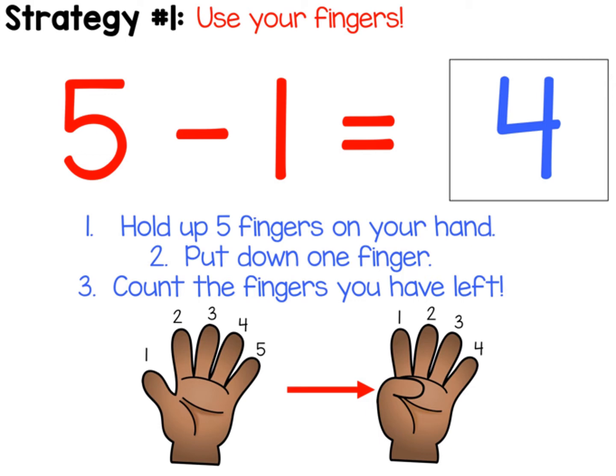Boys and girls, we're going to be learning different strategies you can use to subtract. The first one is using your fingers. You always have them with you, so they're a fantastic tool to use. If we want to do five minus one, you would first hold up five fingers because that's how many you're starting with. Then it says minus one. That means put one down and then count how many fingers you have left, which would be four.